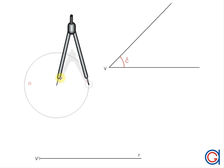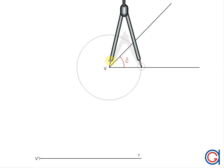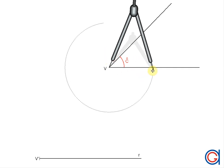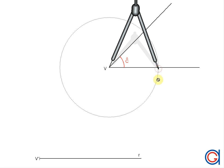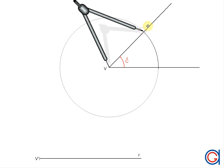So to do this, setting our compass to a certain radius, we are going to describe two arcs. Firstly, setting the compass on vertex V, we scribe an arc until it cuts the adjacent lines at points A and B, as can be seen here.